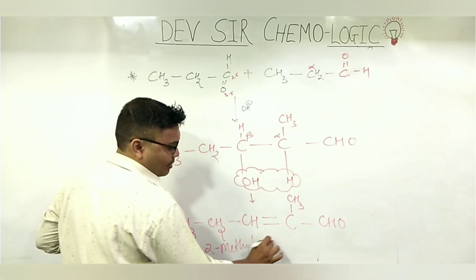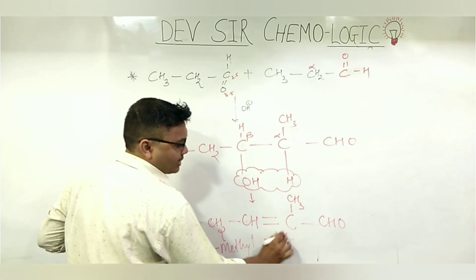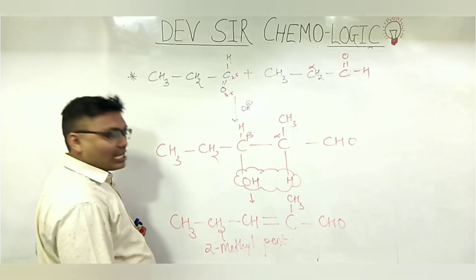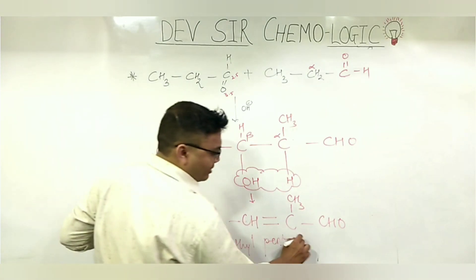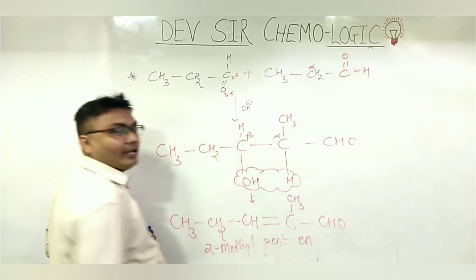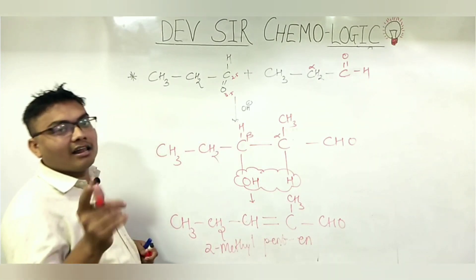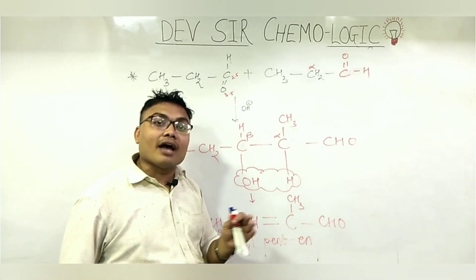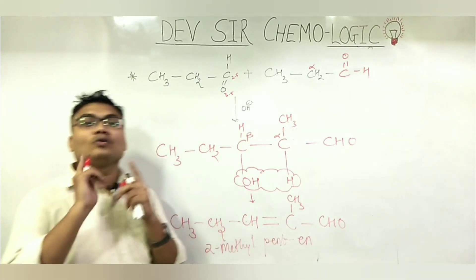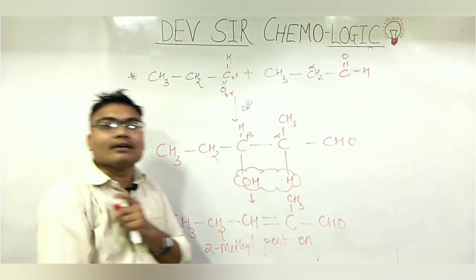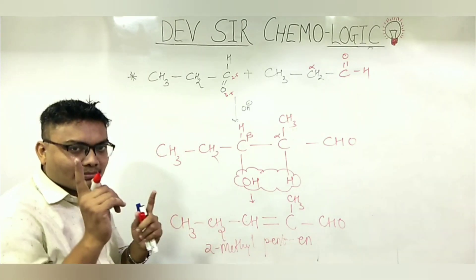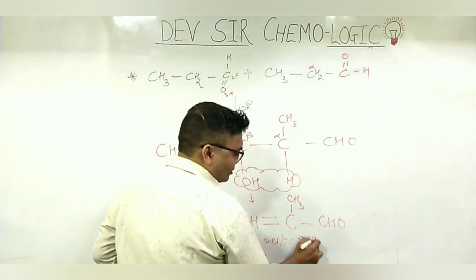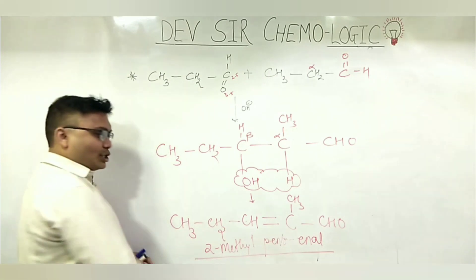There are 5 carbons — so this is pentanal. At the second position there is a double bond, and the suffix for an aldehyde is 'al.' No position number is needed for the aldehyde, as it is always at the terminal carbon. The IUPAC name is 2-methyl-pent-2-enal.